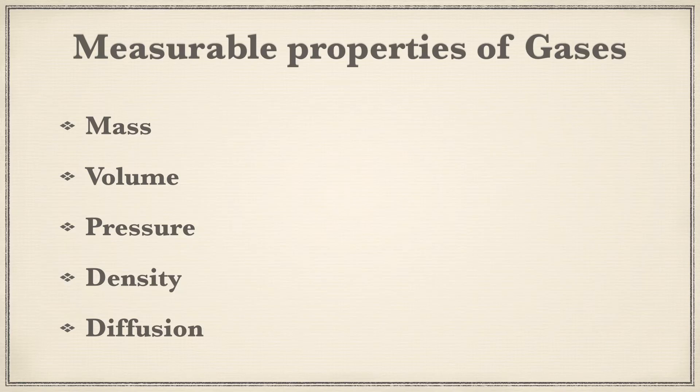Next, we are going to learn about the measurable properties of gases. There are five measurable properties of gases: mass, volume, pressure, density, and diffusion — which we have also seen in the first chapter. We will just have a revision of these.